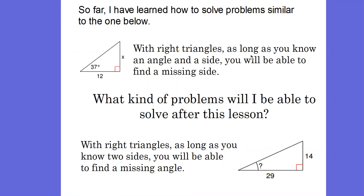So with right triangles, as long as you know an angle and a side, you will be able to find a missing side, just like we've been doing in the problems before.